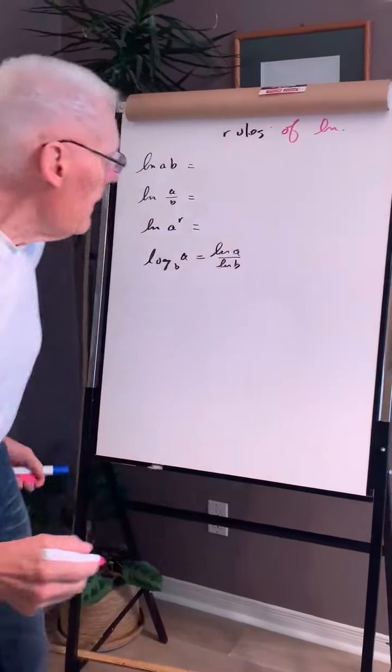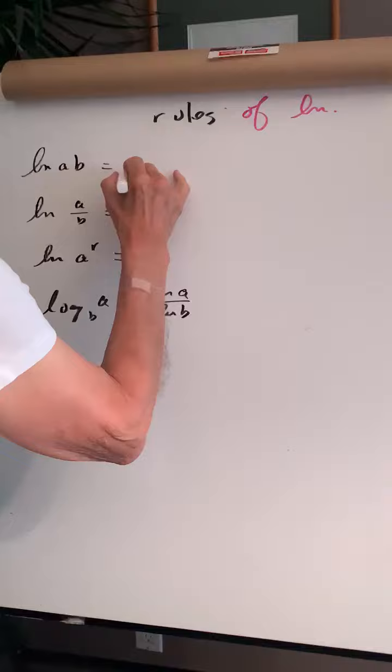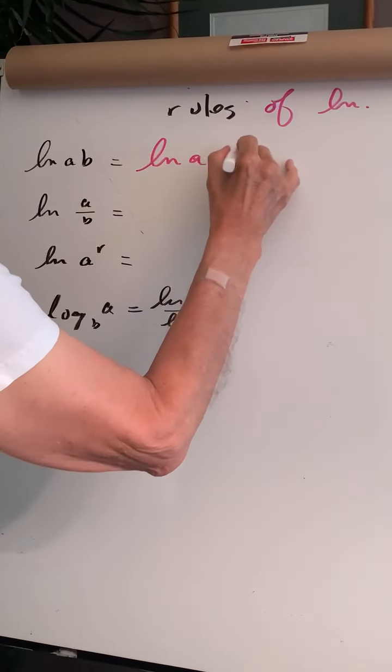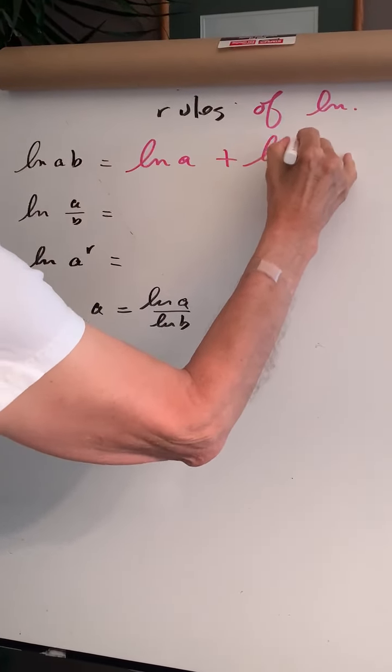Okay, the rules of ln. The ln of AB is the ln of A plus the ln of B.